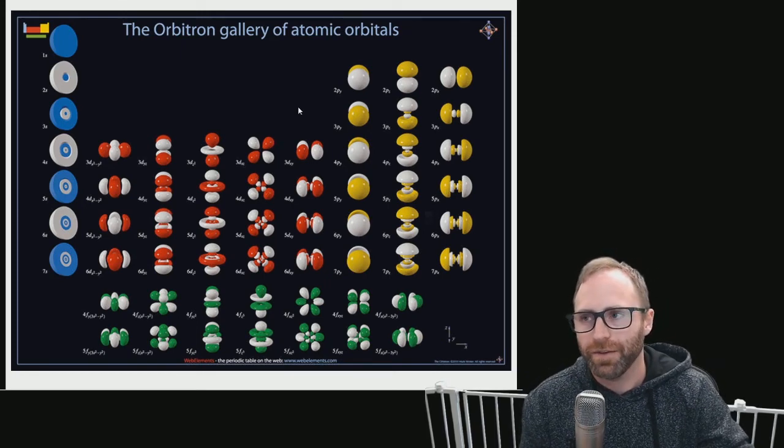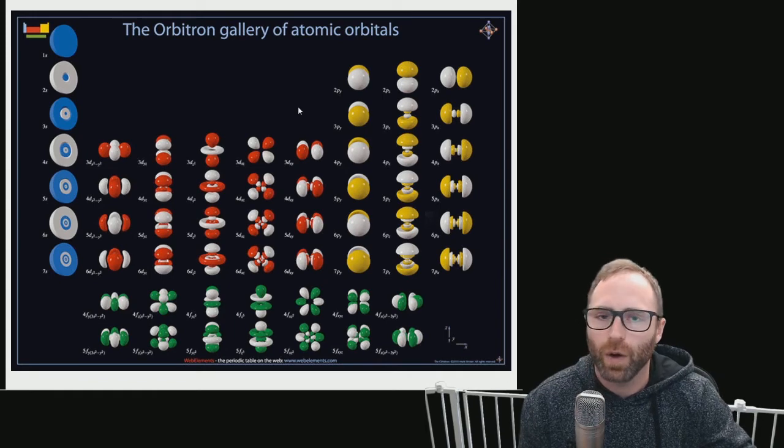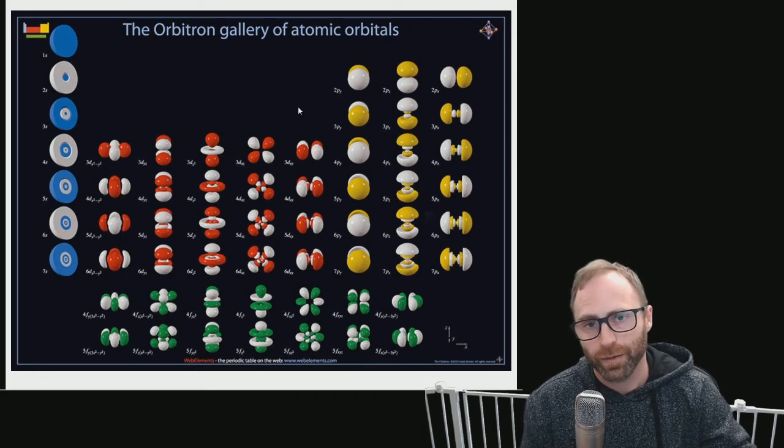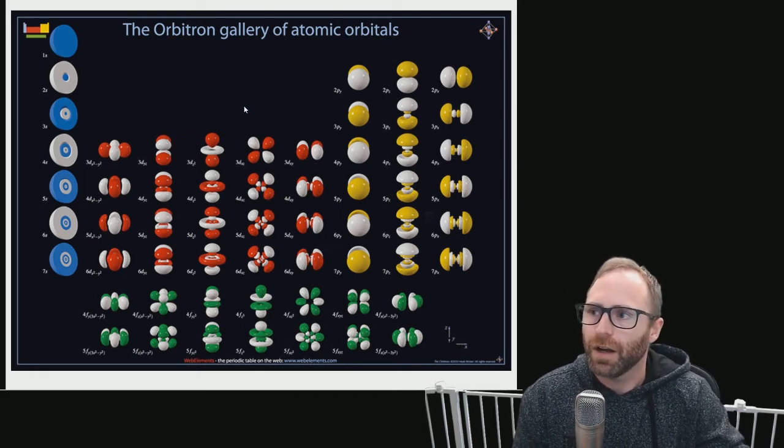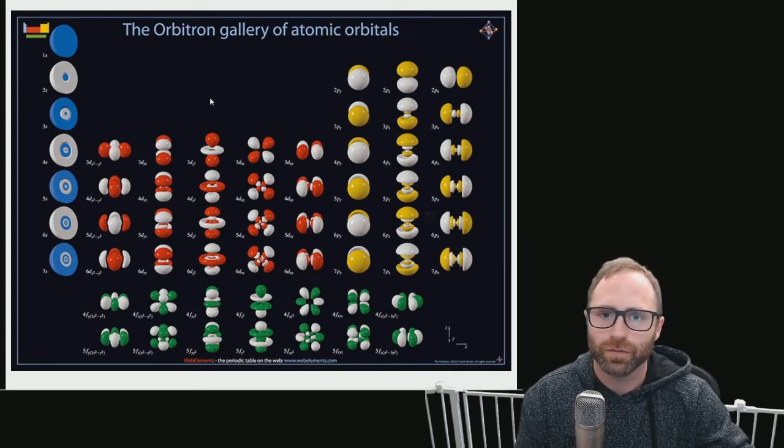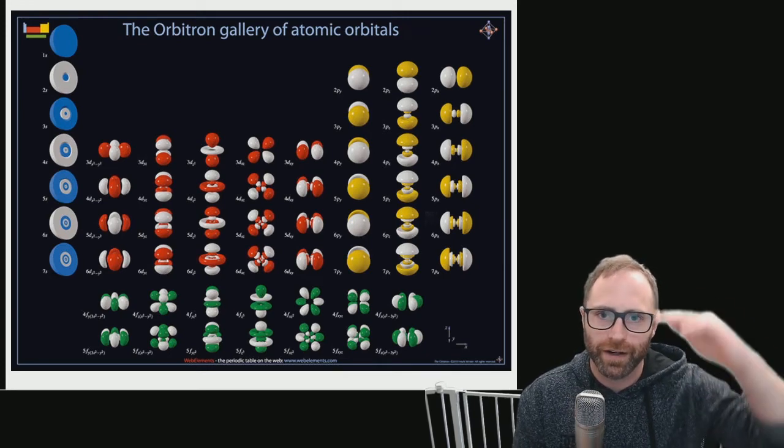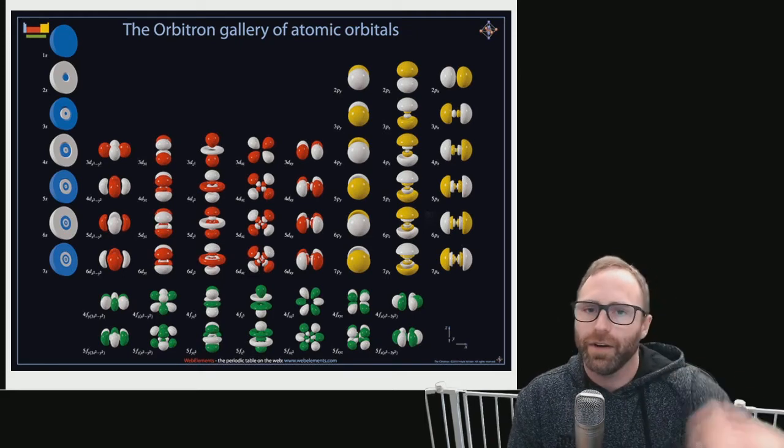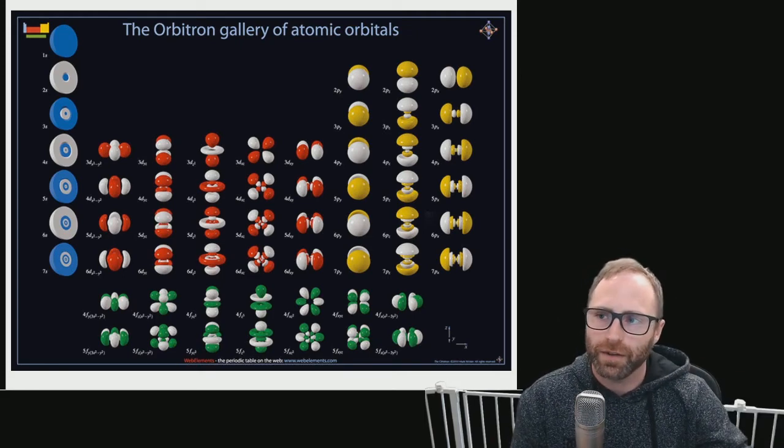Something that might come to your mind would be which one of these is more energetic, because we talked about the principal quantum number n giving us the idea of energy. So it's time to figure out, on an energy diagram, how do all of these different orbitals relate to one another?